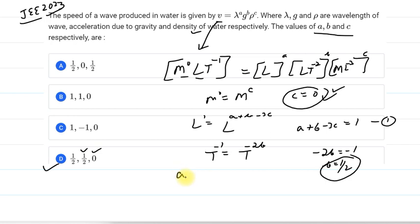So A ka value we need to find. A is simply 1 minus B plus 3C. So C was zero. So it is 1 minus half. So we can say that it is simply half. So A ka value is half. So obviously D is the answer for this question.